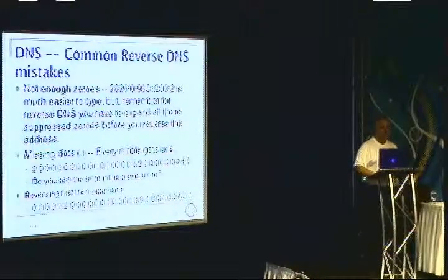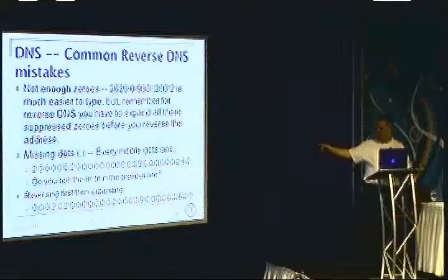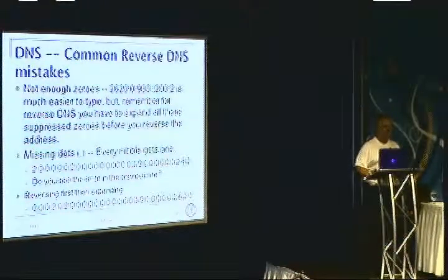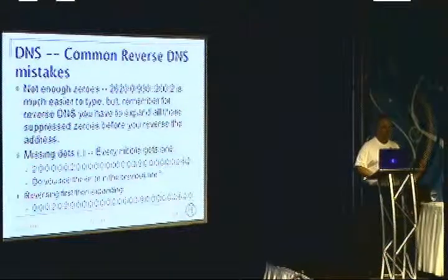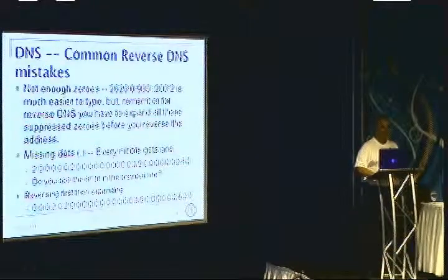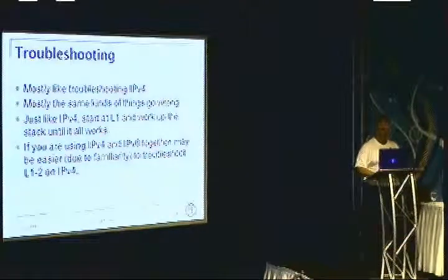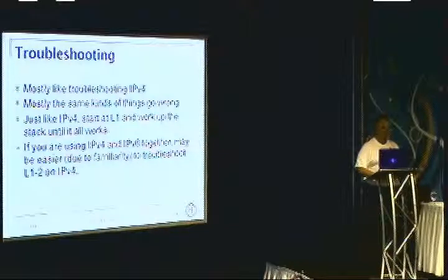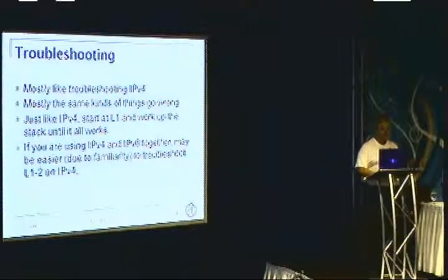Common reverse DNS mistakes: not enough zeros — if you don't put all the zeros back you get weird results. Missing dots — it's very easy to do this; I once spent about 30 minutes staring at a reverse DNS entry before realizing a missing dot was why it wasn't resolving correctly. If you reverse first and then expand, you're likely to put the zeros back in the wrong place. Troubleshooting is mostly like troubleshooting IPv4 — mostly the same things go wrong. Start at layer one and work up the stack. If using both IPv4 and IPv6, it may be easier to troubleshoot layers one and two using IPv4 tools, since once they work for v4 they'll probably work for v6.